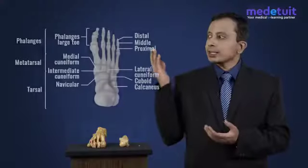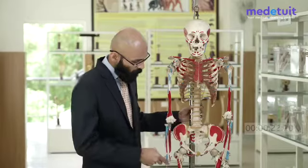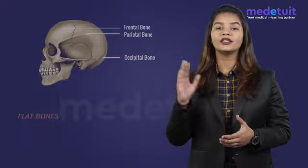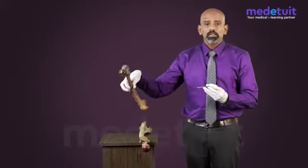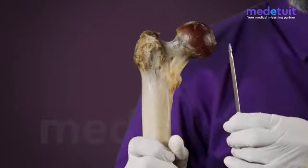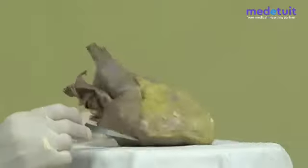Dear students, today we are going to dissect the abdomen. Here is the image of the cranial wall, the muscle attachment, and the gastrocnemius, as you can see here.